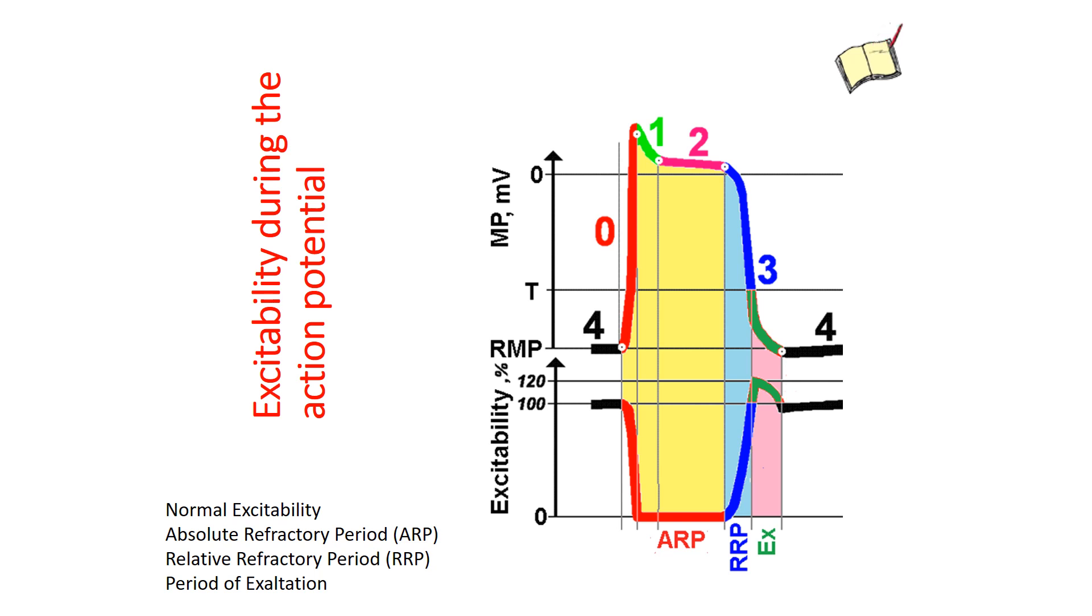The end of phase 3 below the threshold level corresponds to the period of exaltation according to Vodansky. Green lines on both graphs. These are time conjugate graphs you should be able to draw.